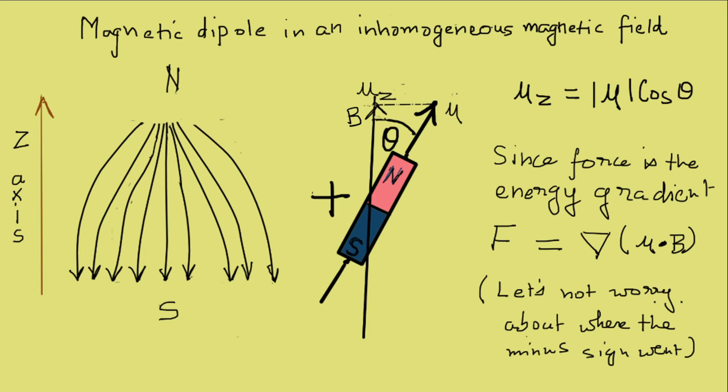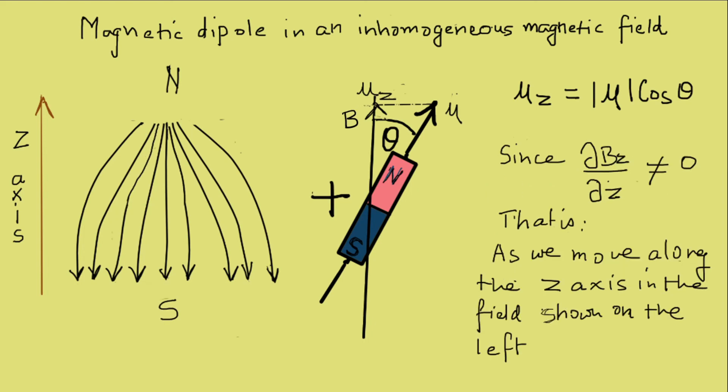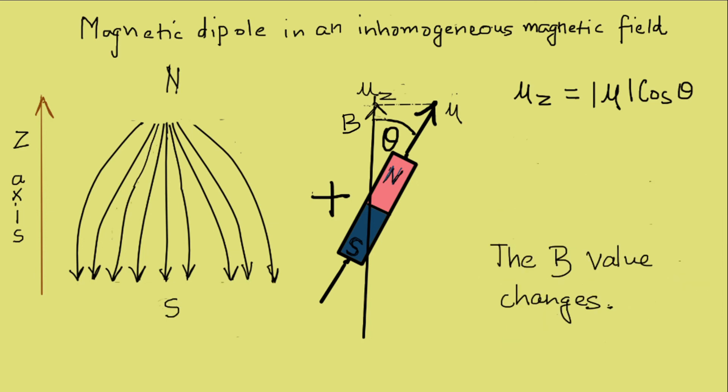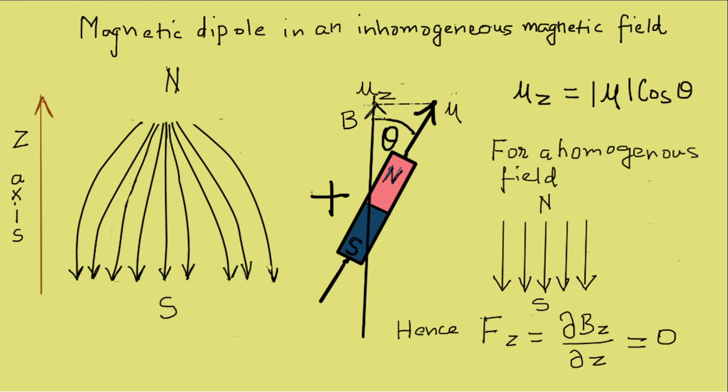We are calculating the gradient here. Let us not worry where the minus sign went for now. As the inhomogeneous magnetic field is in the z direction, we get F_z equals mu dB by dz or F_z equals mu_z dB_z by dz. The force is non-zero because dB_z by dz is non-zero, meaning as we move along the z axis the value of B changes. Had it been a homogeneous field, B would be constant, dB by dz equals zero and thus F_z equals zero.